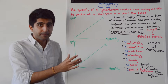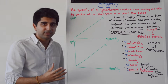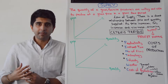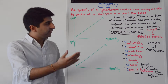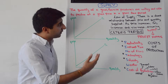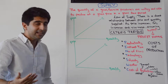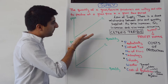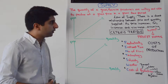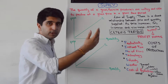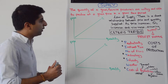We assume ceteris paribus to get to the law of supply — to get to this supply theory. Just like with demand, we can indicate these movements in price on the supply curve itself. The supply curve is drawn upward sloping because that indicates this direct relationship: as price goes up, quantity supplied goes up.